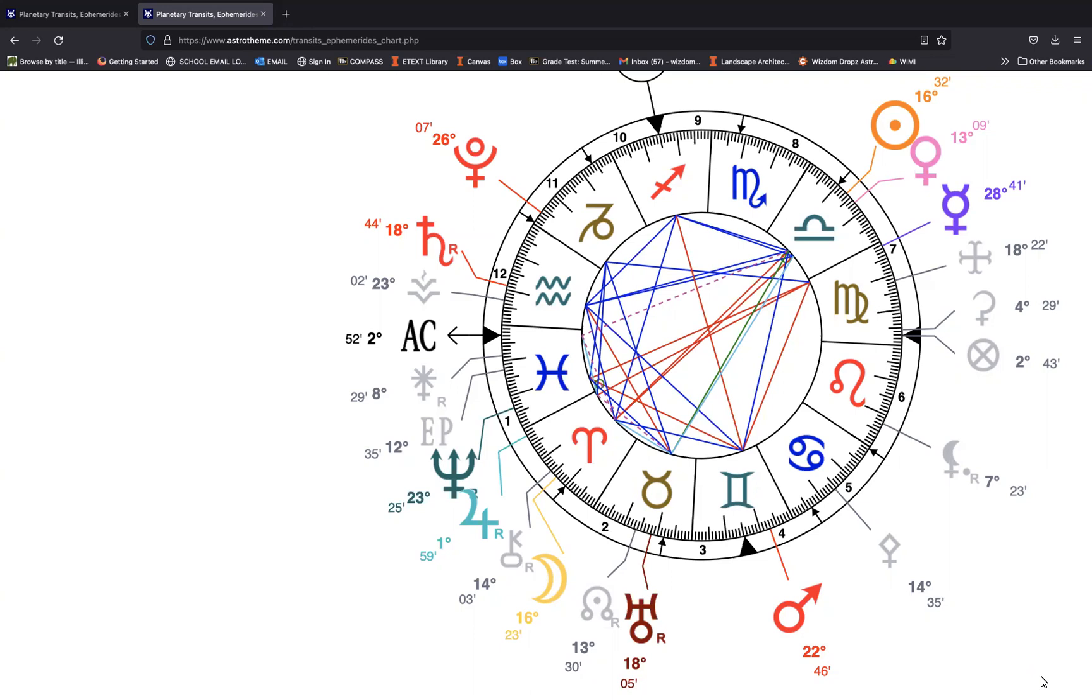Today we are discussing the Aries full moon which is perfecting today, October 9th, 2022. Happy October everybody!